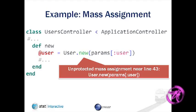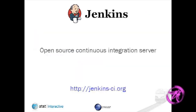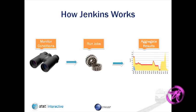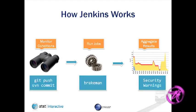Now we have the tool giving us warnings, but we're still running it manually. That's where Jenkins comes in — formerly Hudson — which is an open source continuous integration server. Basically, you're going to monitor a source code repository, and when someone checks in some code, we'll run some jobs against it and report some results. In our case: someone commits code, we run Brakeman, and return some results.